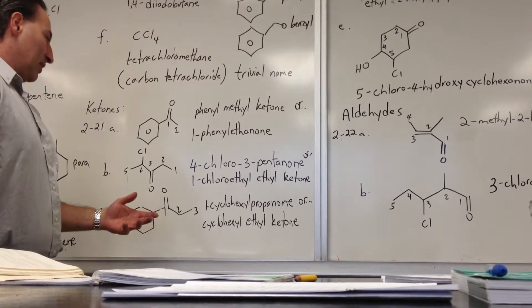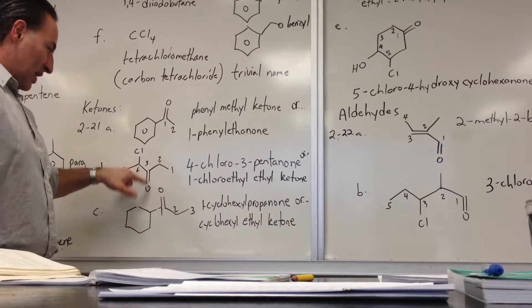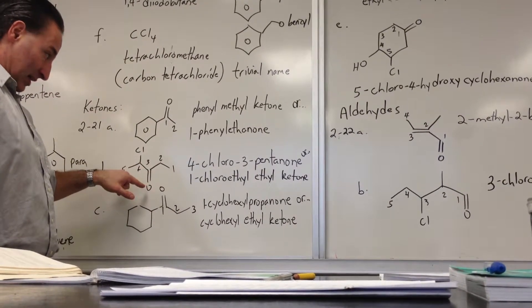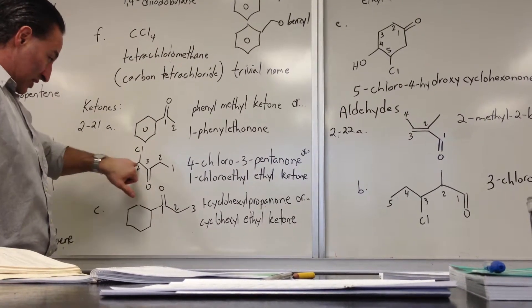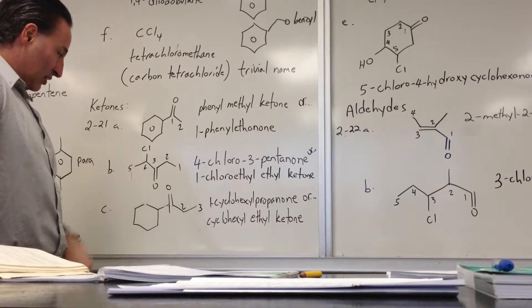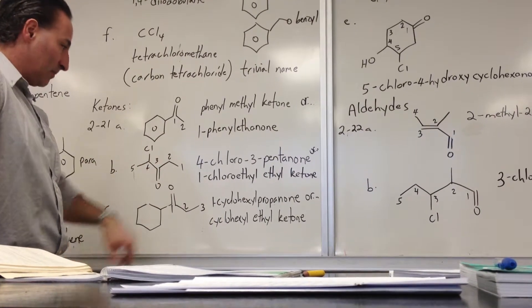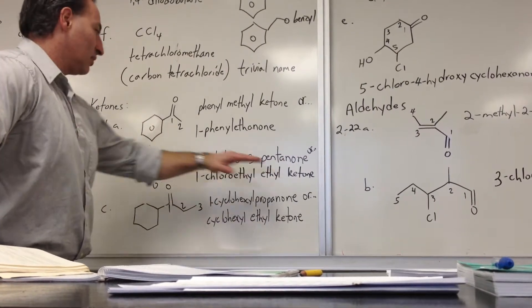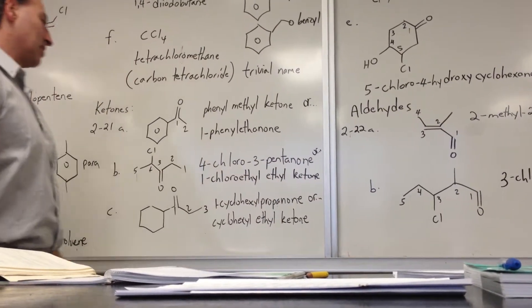You could also name it 1-chloroethyl ethyl ketone. See there are two ethyl groups attached to a ketone as well, if you look at it that way. You could say 1-chloroethyl, this is the first position off the ketone, off the carbonyl. And then this is the ethyl, so 1-chloroethyl ethyl ketone, three separate words.